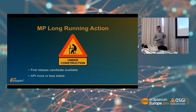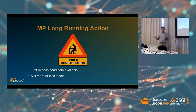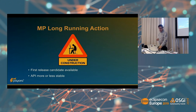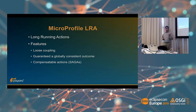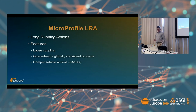We have had a first release candidate available since the summer. The API hasn't changed in the last two or three months, so it's stable. We are now finalizing the specification wording and adding tests. MicroProfile LRA is based on those saga compensatable actions — very loosely coupled, built on top of JAX-RS. The only thing propagated and linking all your microservices together in one transaction is a single header passed to all your services.